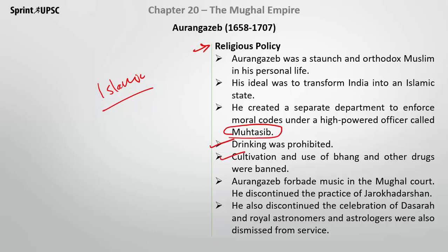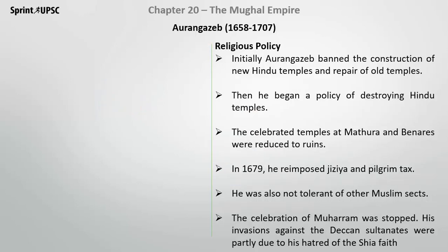Cultivation and use of bhang and other drugs was also banned. Music was forbidden in his court. The practice of Jharokha Darshan was discontinued. Royal astrologers had their services removed. In the initial years, construction of Hindu temples was stopped, and celebrated temples at Mathura and Varanasi were reduced to ruins. In 1679, Jizya and pilgrimage taxes were again imposed.